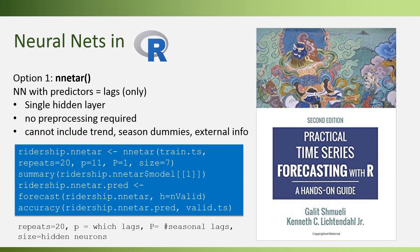In R, we can use the nNetAR function. This function uses only lags as predictors, is very simple to use, and only allows a single hidden layer, but it handles all preprocessing automatically. The trade-off is that you cannot include trends, seasonal dummies, or external information. Key parameters include: 'repeats', which controls the number of networks fitted (default 20); 'p', the number of lags from 1 to p (here we chose 11, so lags 1 through 11); capital 'P', the number of seasonal lags (with monthly seasonality, P=1 adds a lag of 12); and 'size', the number of neurons in the hidden layer (here we chose 7).